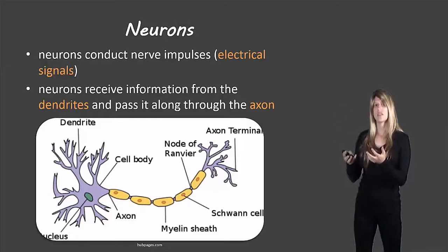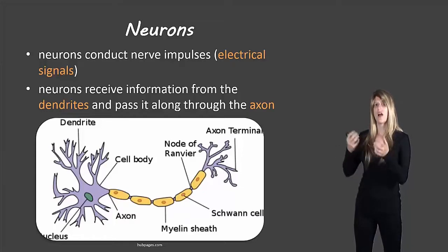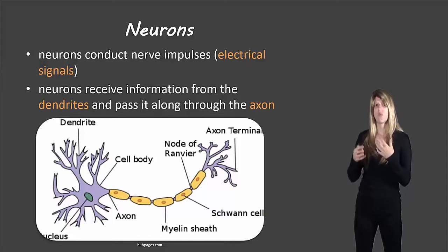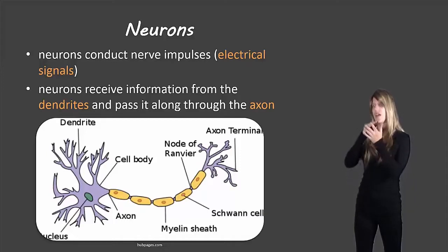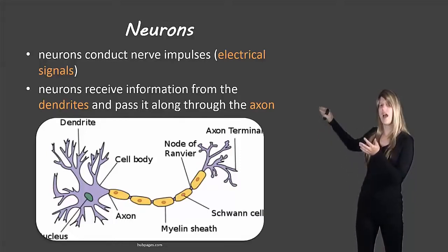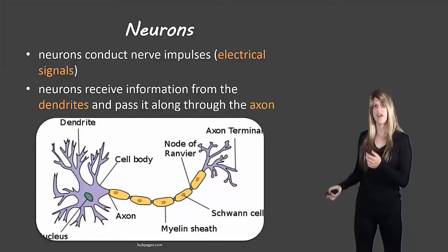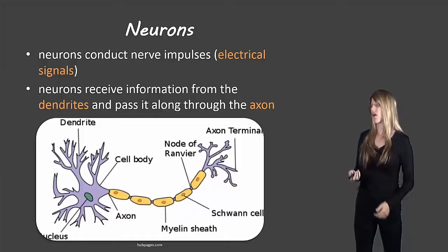The dendrites are where information comes to the cell. The cell can then decide if it wants to send that information along, and it will send it through the axon towards other cells to give them that information as well.